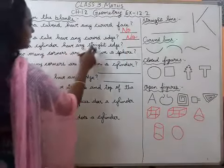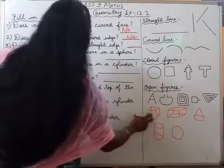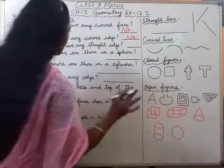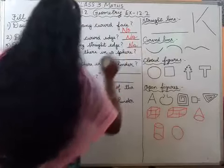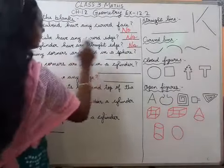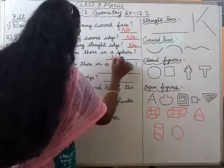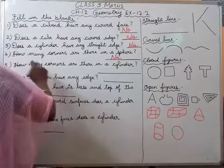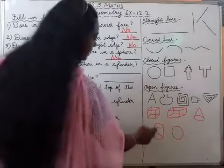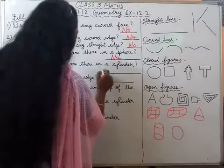Does a cylinder have any straight edge? Cylinder mein straight edge nahi hota. So the answer is no. Does a sphere have any curved edges or corners? Sphere mein koi corners nahi hota. So the answer is no. How many corners are there in a cylinder? Cylinder mein corners nahi hai. So the answer is: no corners.